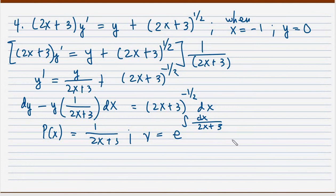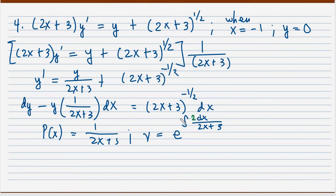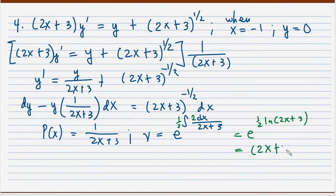Our integrating factor is e raised to the integral of dx/(2x plus 3). This can be solved using a logarithm substitution with u = 2x plus 3, so du = 2 dx, giving a balancing factor of 1/2. This becomes (1/2)·ln(2x plus 3), which equals ln(2x plus 3)^(1/2), so the integrating factor is (2x plus 3)^(1/2).